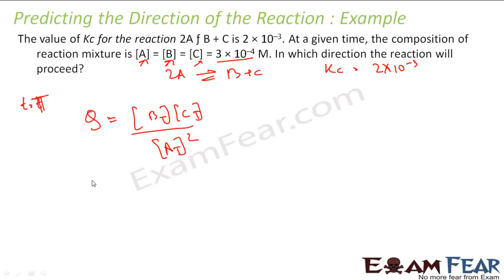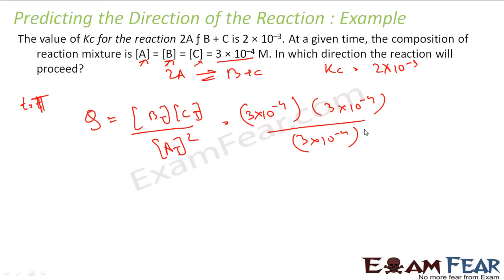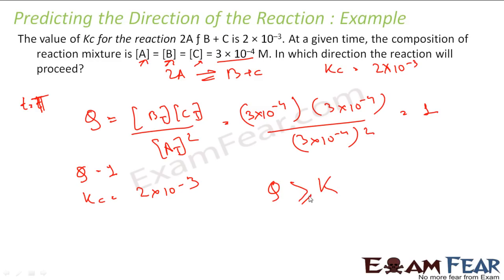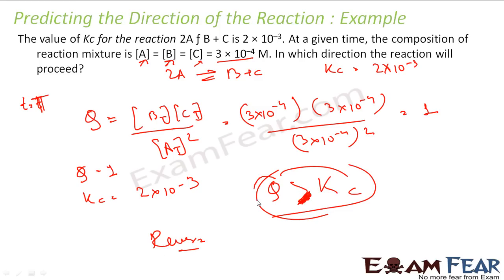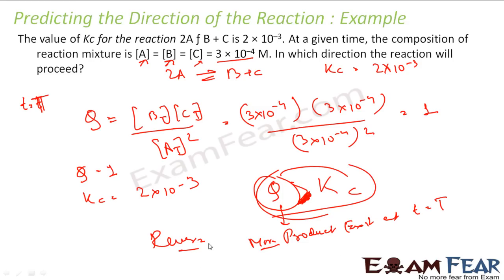Substituting the values: [B] = 3 × 10⁻⁴, [C] = 3 × 10⁻⁴, and [A]² = (3 × 10⁻⁴)². This gives Qc = 1. Since Kc = 2 × 10⁻³, clearly Qc is much larger than Kc. Since Qc > Kc, that means there are more products at this time compared to equilibrium. Therefore, the reaction will proceed in the reverse direction to reduce the product concentration.